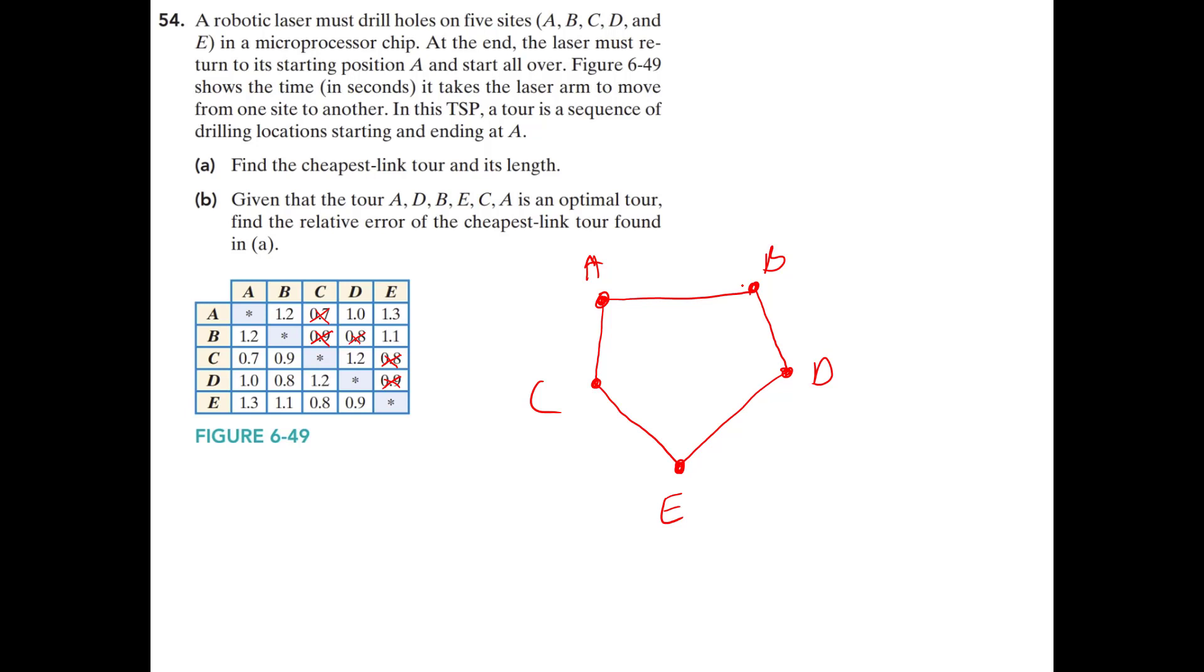At the end, the laser must return to its starting position at A. Right? And so then there are two tours. We start at A, go to B, then go to D, then go to E, then go to C, and then back to A. Or we can go backwards, A, C, E, D, B, A. Either one of these.